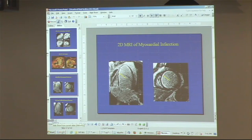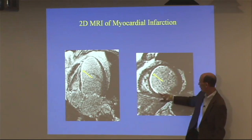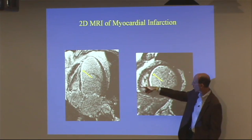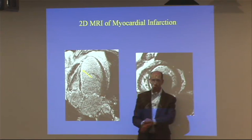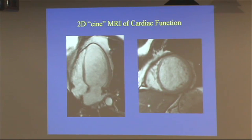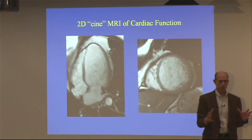Switching to MRI: this is a static 2D image showing how MRI can detect past heart muscle damage. A contrast agent was given and the resulting bright signal indicates a prior heart attack in that region. In the same patient, you can also evaluate the squeezing function over time to see how the damaged area affects cardiac performance.